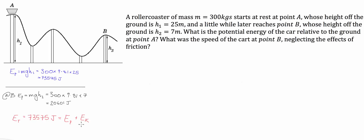The kinetic energy is just going to be the difference between the new potential energy and the original potential energy, because when the cart is stationary, the potential energy is the maximum or total energy. So the kinetic energy at B is simply 73,575 minus 20,601, which gives us a kinetic energy at B equal to 52,974 joules.